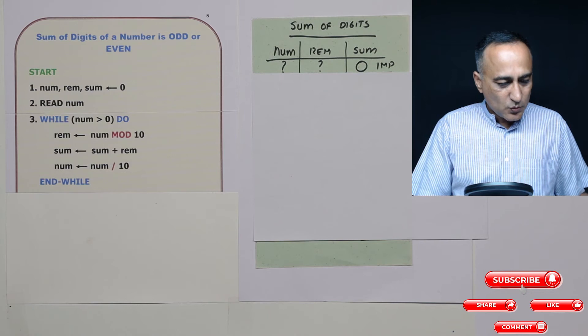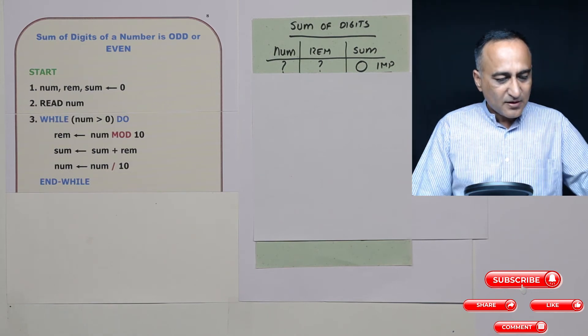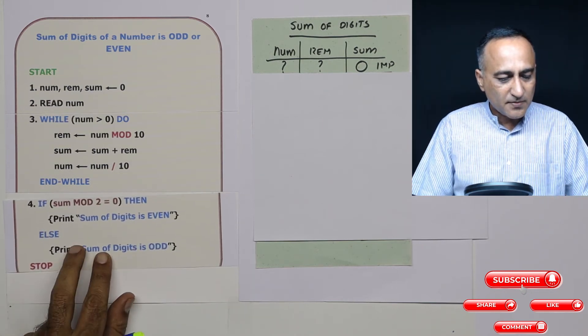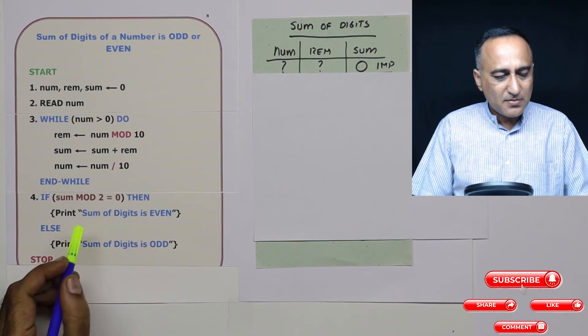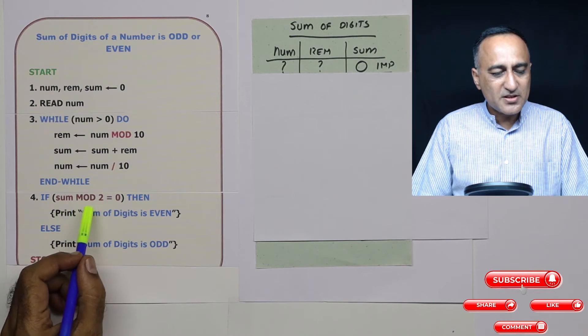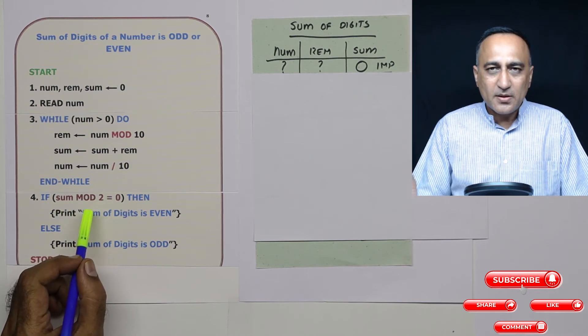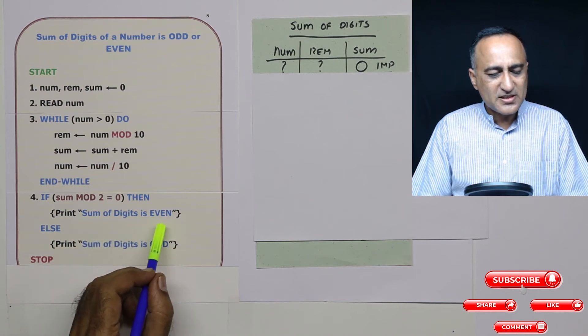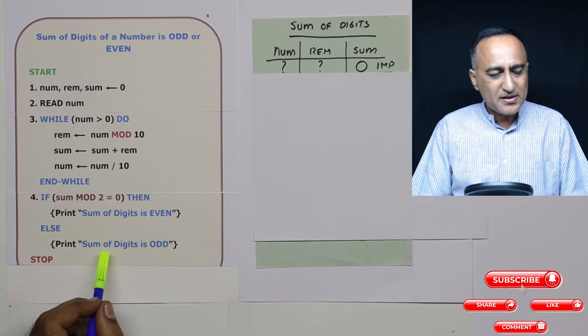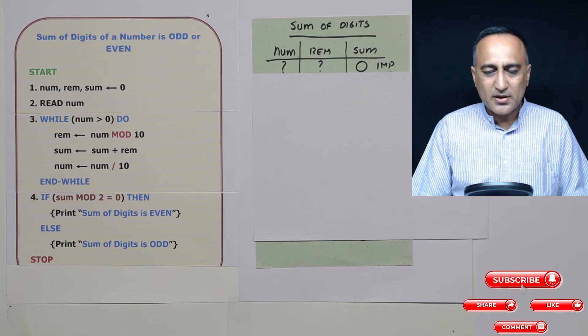Now once this extraction is done, I have a very simple question. I am going to ask if the sum mod two, that means the sum if it is divided by two and the remainder happens to be zero, then I am going to say sum of digits is even, else I am going to print sum of digits is odd and come to a stop.